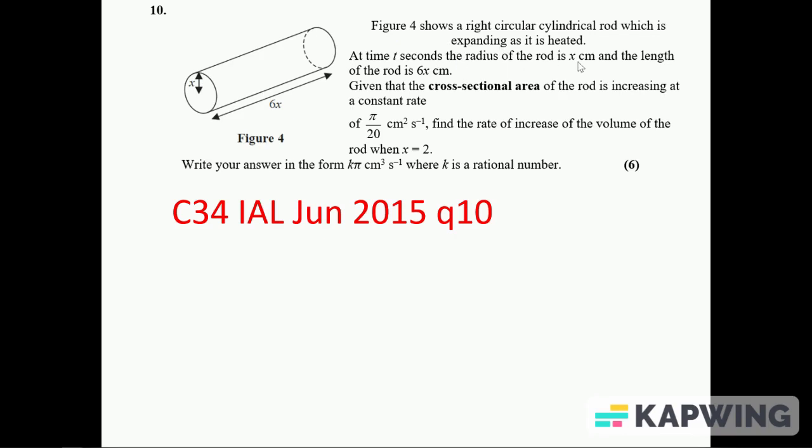It's expanding as it's heated. The radius is x and the length of the rod is 6x. The rate of change of the cross-sectional area is constant at π over 20. We've got to find the rate of increase of the volume when x is 2 and give your answer in the form k π.